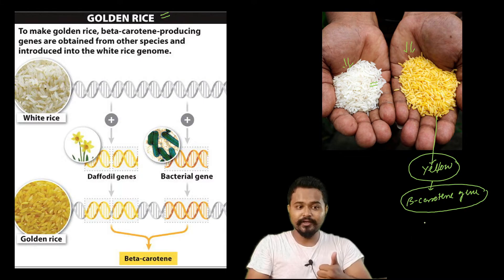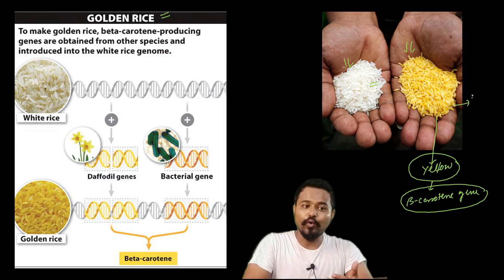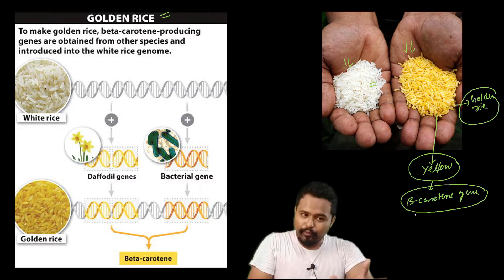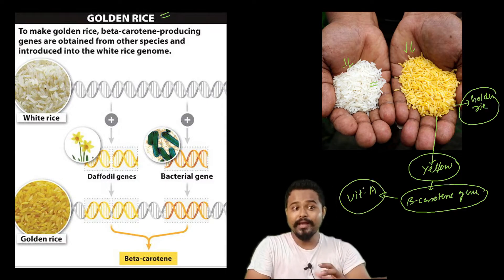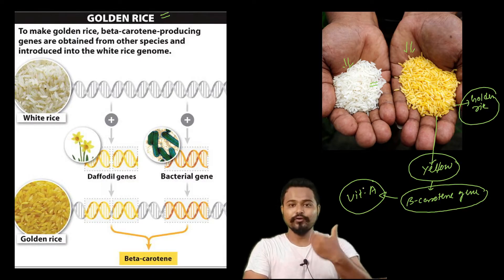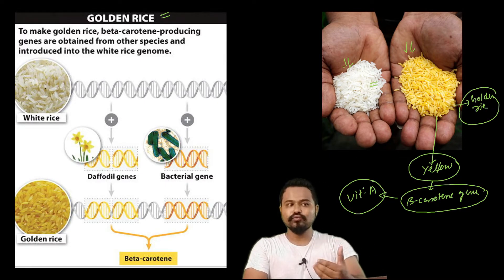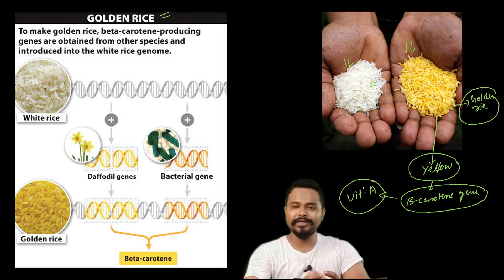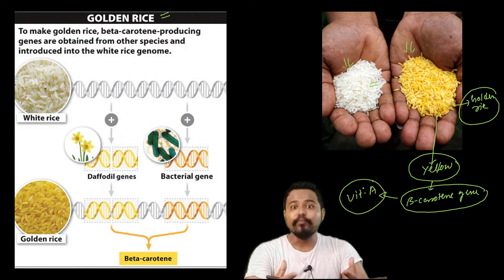What is the beta-carotene gene? Golden rice contains beta-carotene, which is linked to vitamin A. Rice is important because in regions like Uganda, Africa, and other areas, people cannot easily get enough vitamin A from their diet.